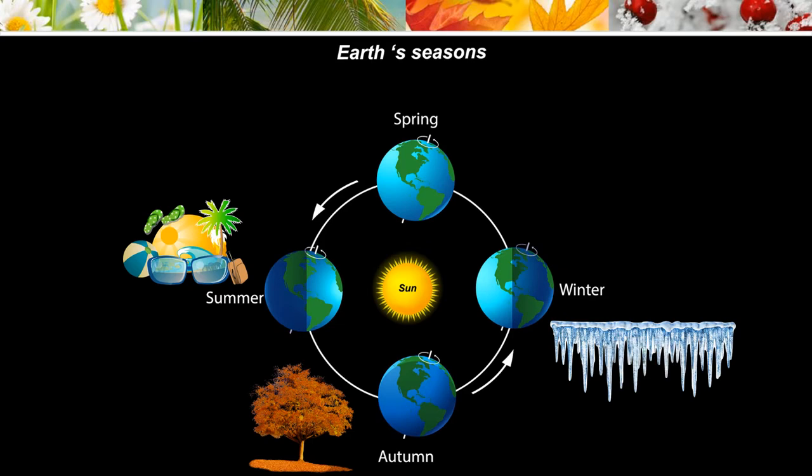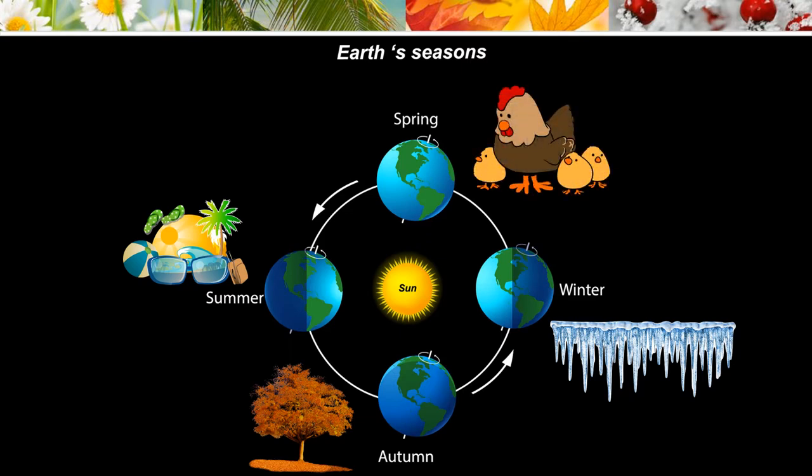In winter, we have colder weather, sometimes snow and frost. The trees have no leaves and the amount of time it is light during the day is at its shortest. In spring, the weather usually turns warmer, trees begin to grow their leaves, plants start to flower, and young animals such as chicks and lambs are born.